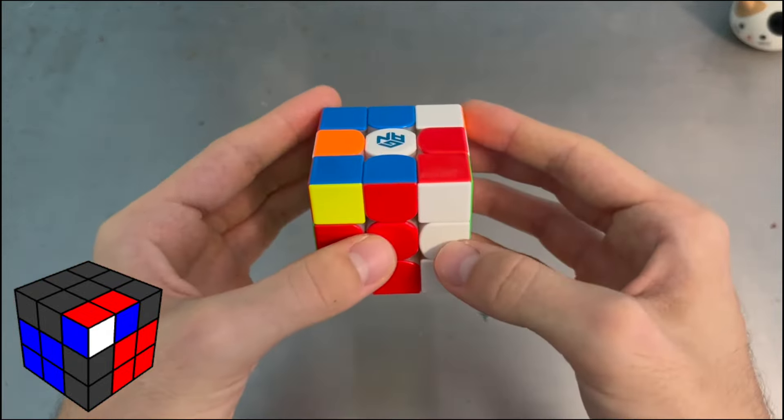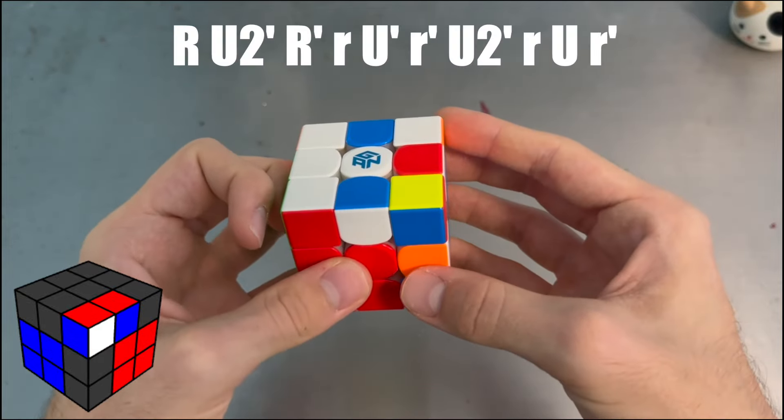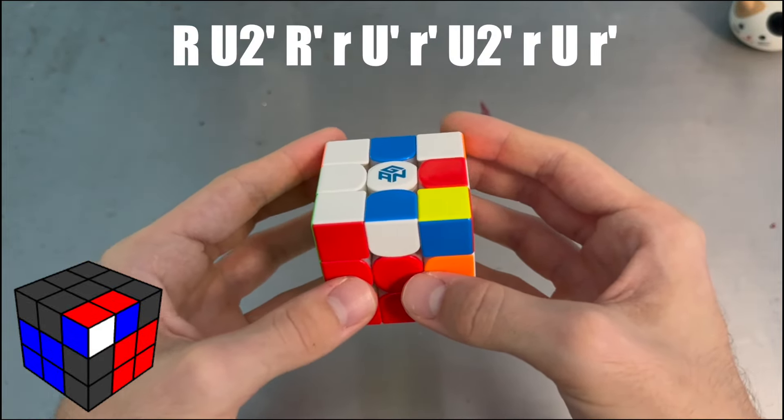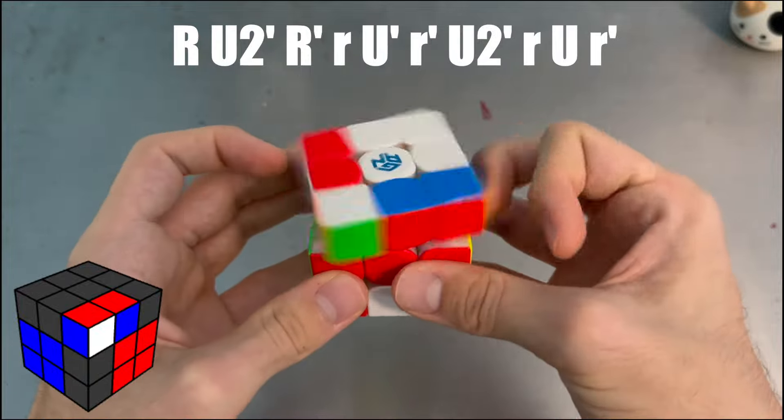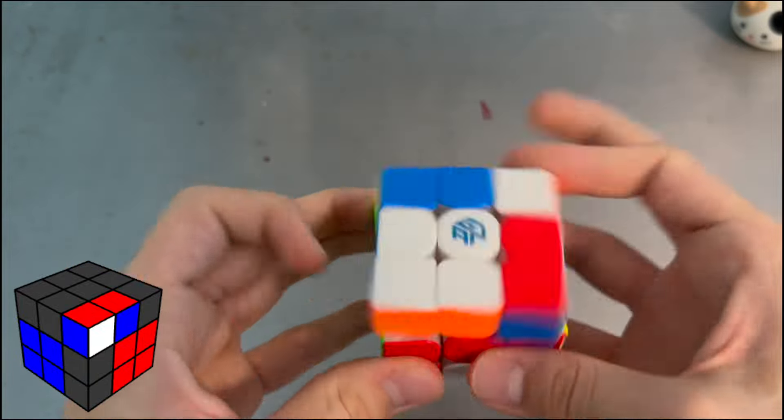Lastly we have this case where you normally do this and insert it back. But for this algorithm you want to do R U2 R prime and then this is a very common trigger in lots of ZBLS algorithms.